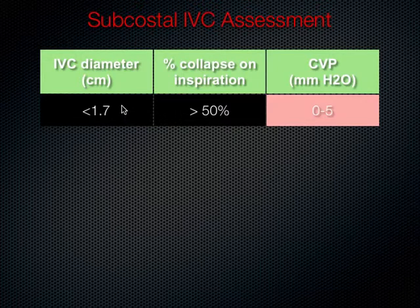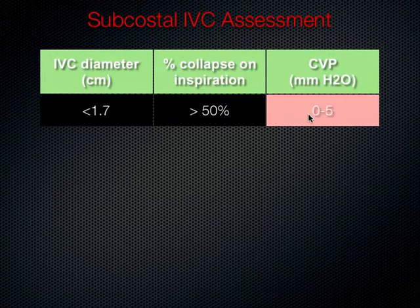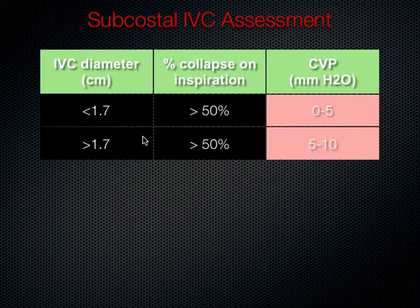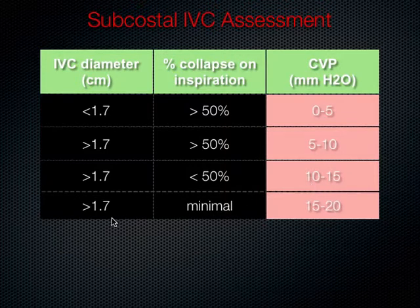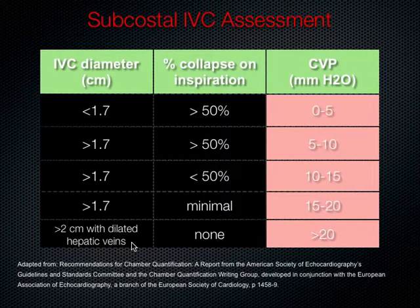If the IVC diameter is less than 1.7 cm with more than 50% collapse on inspiration, CVP is very low — 0 to 5. If it's greater than 1.7 cm with more than 50% collapse, CVP is 5 to 10. Less than 50% collapse gives CVP of 10 to 15. Greater than 1.7 cm with minimal collapse gives CVP of 15 to 20. Greater than 2 cm with dilated hepatic veins and minimal collapse indicates CVP greater than 20.